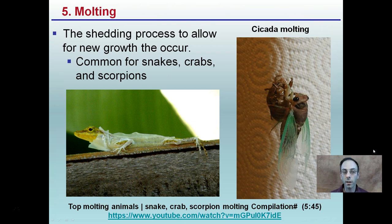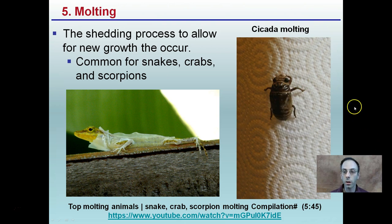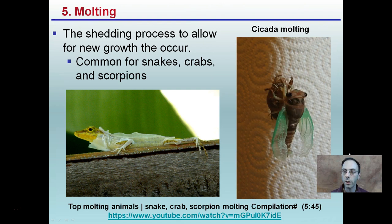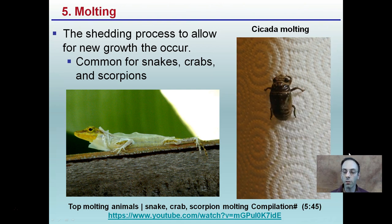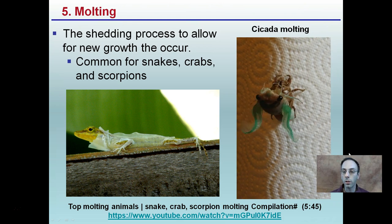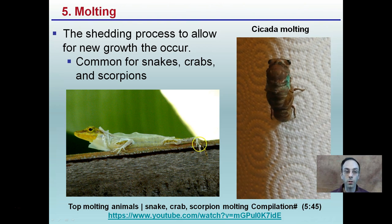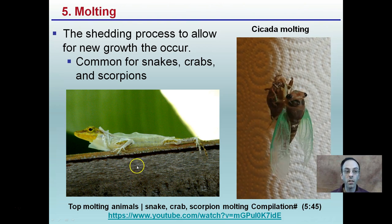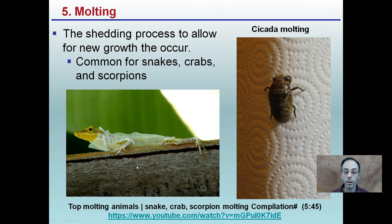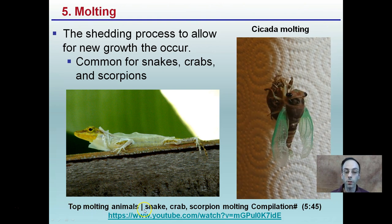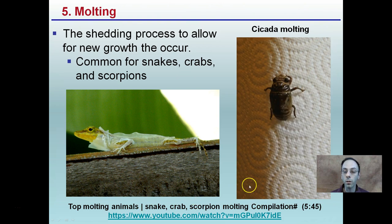Molting is a shedding process that allows for new growth to occur. This cicada is a good example — here in the Northeast you may hear them in the summertime, making that really loud sound on a warm late July or August day. Molting is common not only for cicadas but also for snakes, crabs, and scorpions, which also participate in this molting process.